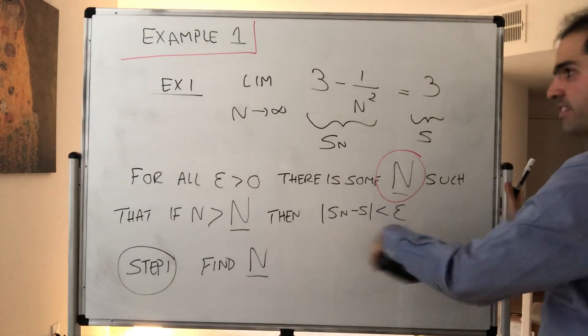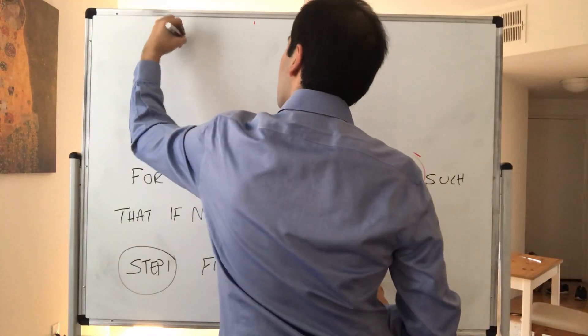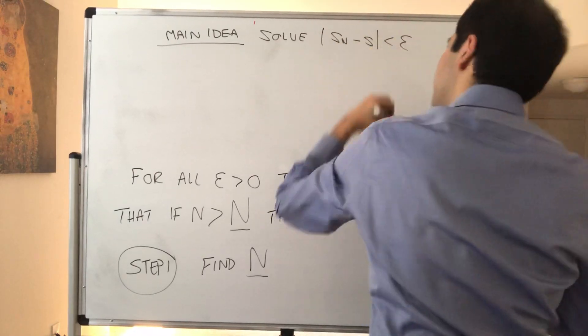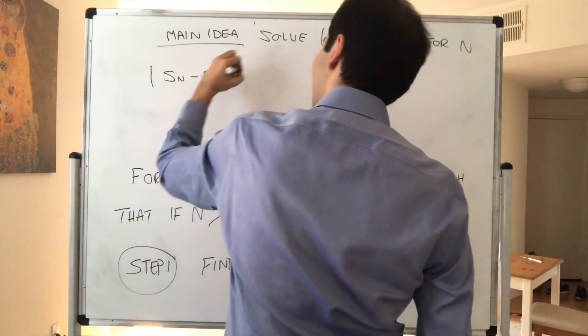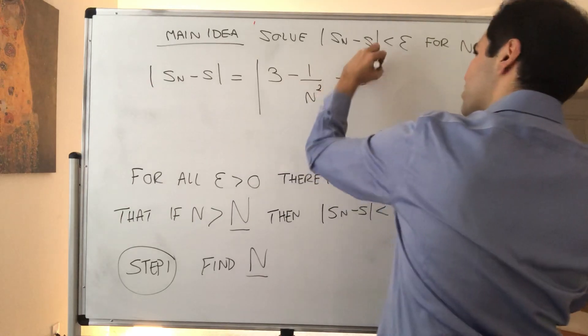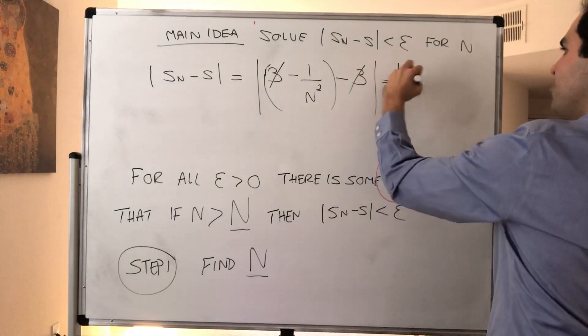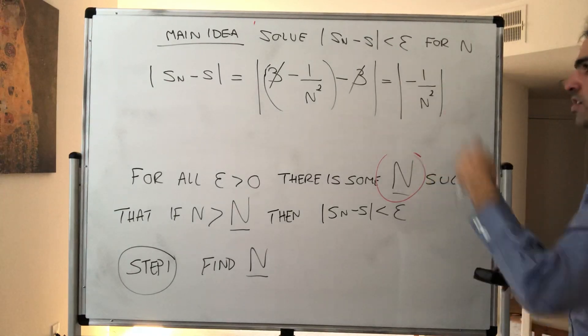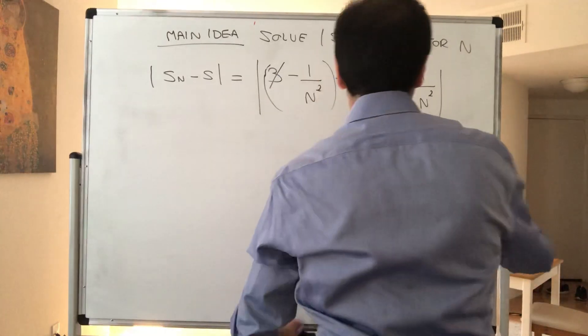And what you would like to do is take this equation and solve it for little n. So again, that's the main idea: solve Sn minus S less than epsilon for n. What do I mean by that? So consider Sn minus S. Again, what is that? That is the difference between the sequence and your limit. So 3 minus 1 over N squared minus 3. This cancels out, which is usually a simplification. And so there is absolute value of minus 1 over N squared. But remember N is a positive integer, so 1 over N squared, I mean, it doesn't even matter here. 1 over N squared is always positive.